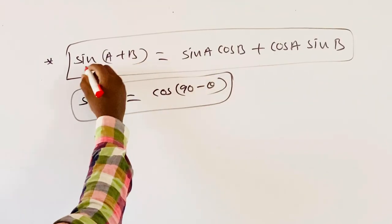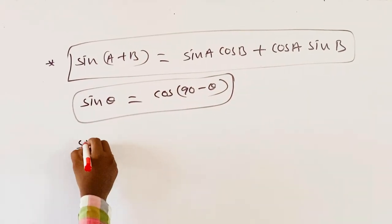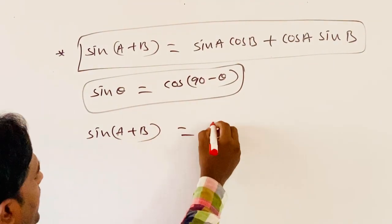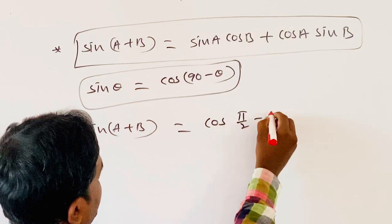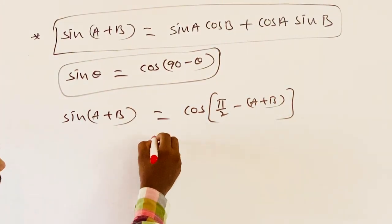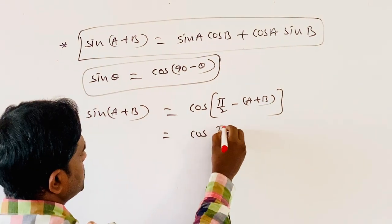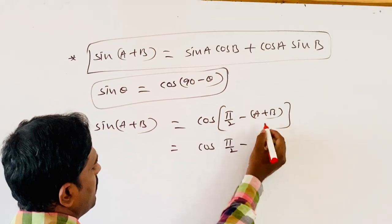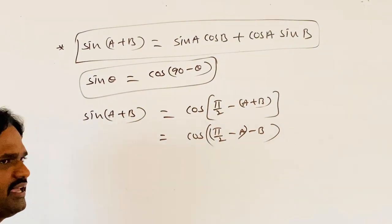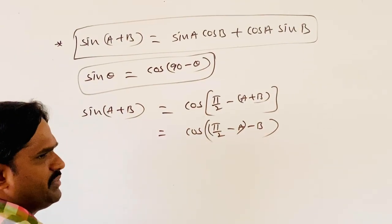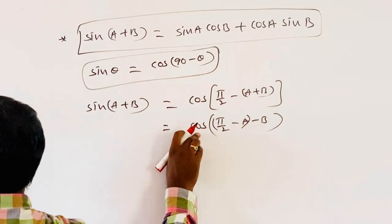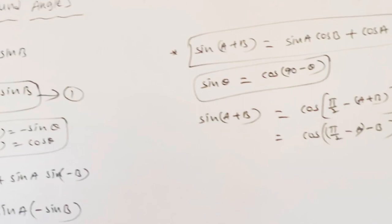So, sin of A plus B — here theta is A plus B — I am writing this as cos of pi by 2 minus (A plus B). Then, by arranging the terms: cos of (pi by 2 minus A minus B). Here I am writing pi by 2 minus A as A and B as B, which looks like cos of A minus B.